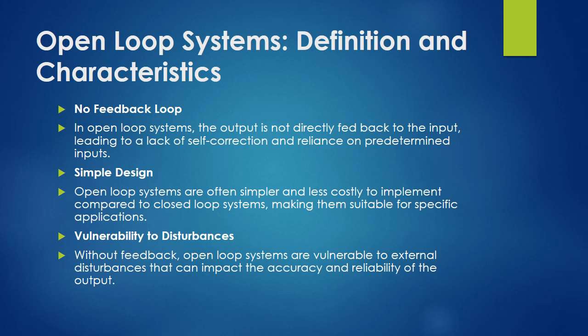Let's begin with open-loop systems — their definition and characteristics. In an open-loop system, there is no feedback loop; the output is not directly fed back to the input, leading to a lack of self-correction and reliance on predetermined inputs.